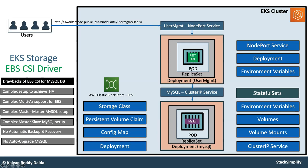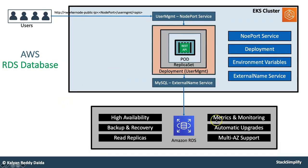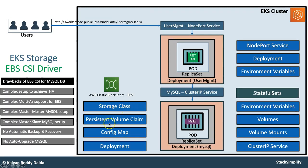You will also understand the drawbacks of using EBS CSI driver and the advantages of using RDS database. Then, using ExternalName service, you are going to implement it with RDS database. Now you have completed the database part with storage classes, persistent volume claim, config maps, and all those things.